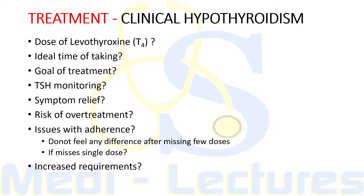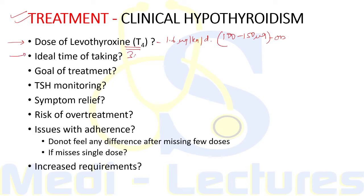For treatment of hypothyroidism, if there is no residual thyroid function, the daily replacement dose is 1.6 microgram per kg per day, which comes to about 100 to 150 microgram daily. The ideal time of taking the tablet is at least 30 minutes before breakfast, on an empty stomach, since absorption is decreased if taken with a meal. The goal of treatment is to bring TSH into the normal range, ideally in the lower half of the reference range.